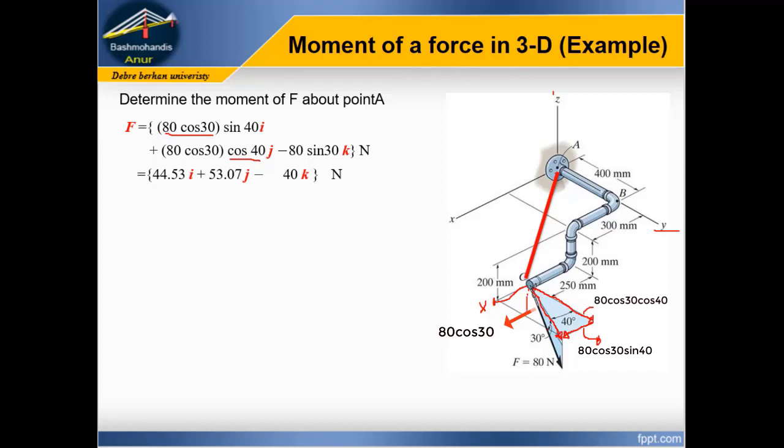What about in the Z direction? In the Z direction, you have force. Finally, F equals 44.53 i plus 53.07 j minus 40 k N.